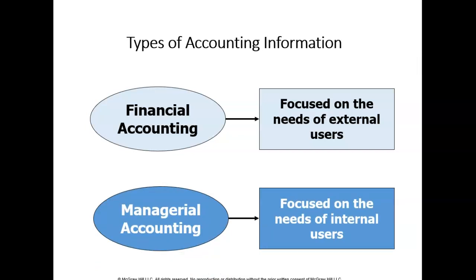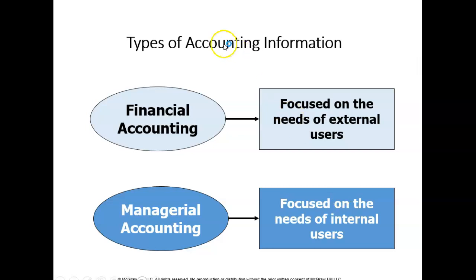There are two major groups of accounting information. Financial accounting, which we'll study during the first half of the semester, focuses on the needs of external users — what do individuals outside the company need to know to make decisions? Managerial accounting focuses on internal users — what information do managers need to run their departments, such as budgets and profit analysis? We'll first focus on financial accounting, then switch about halfway through the semester to managerial accounting.